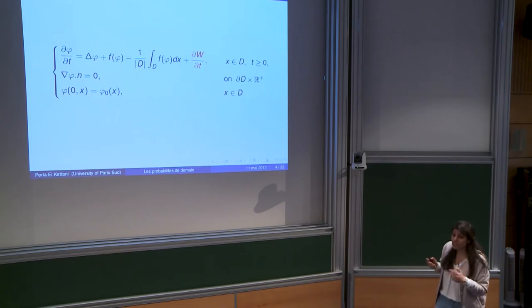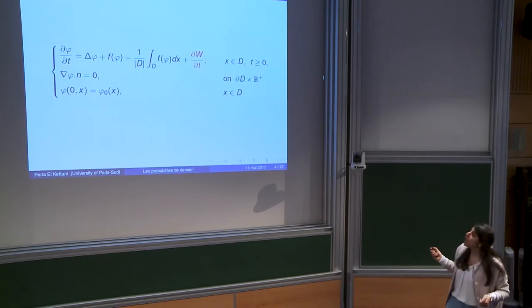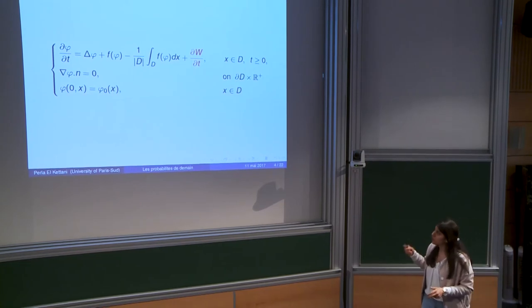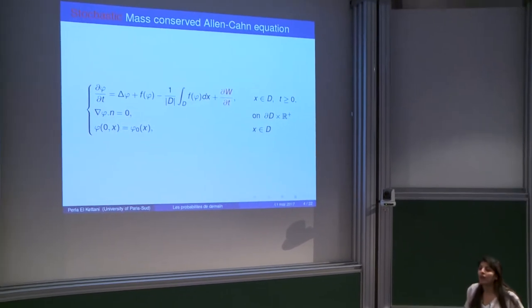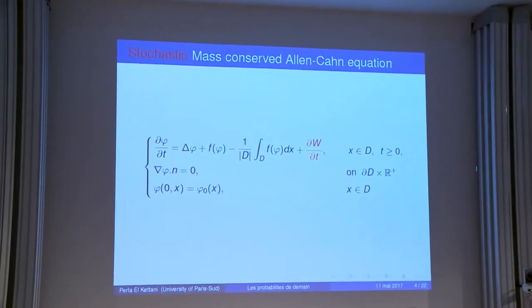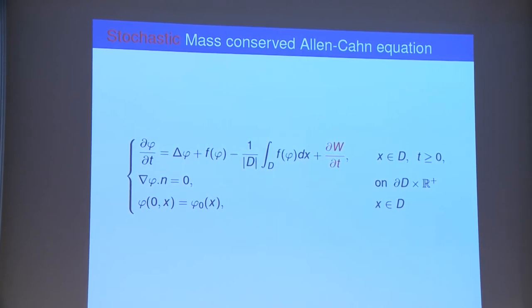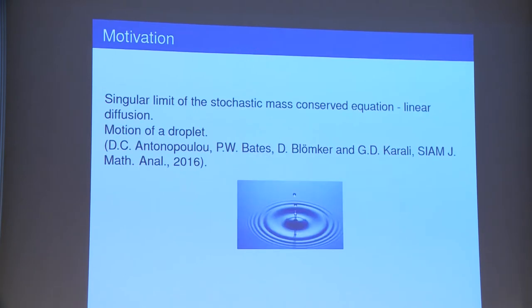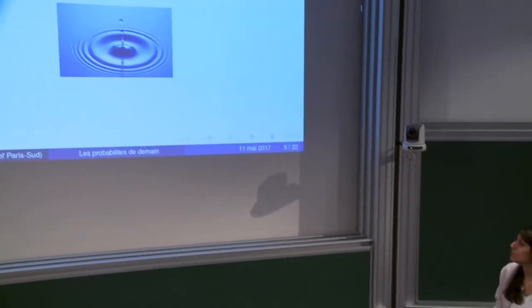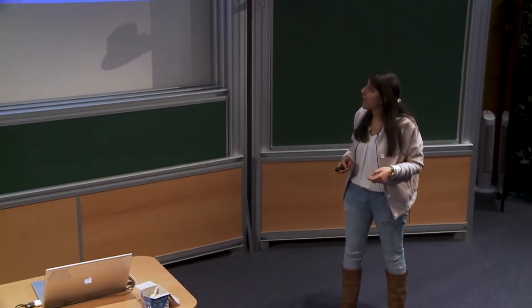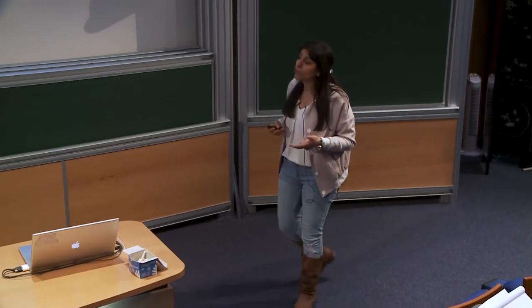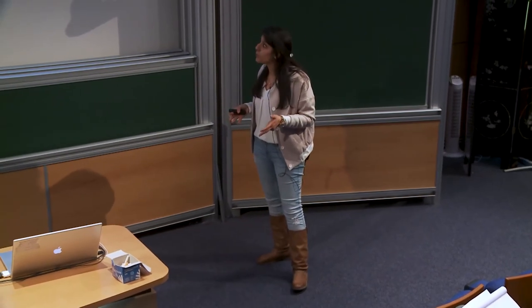We now introduce the stochastic mass conserved Allen-Kahn equation. It is the same equation with linear diffusion, the reaction term, the non-local term, and we add a stochastic noise term: the partial derivative of W over partial derivative of t, with Neumann boundary conditions and initial condition phi_0. The singular limit of this equation was studied by Antonopoulos, Bates, Blomker, and Carali in 2016 to model the motion of a droplet. However, they left the question of existence and uniqueness of the solution open.